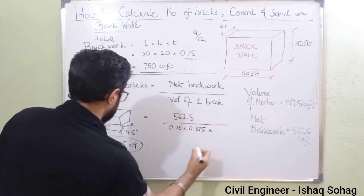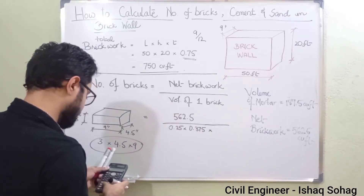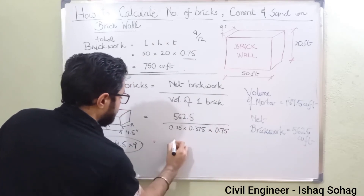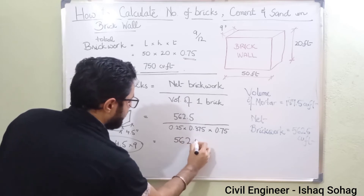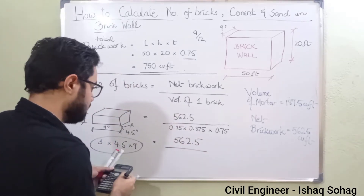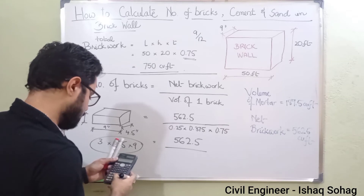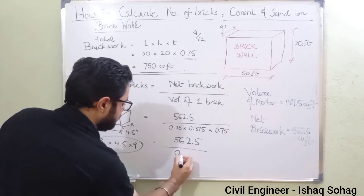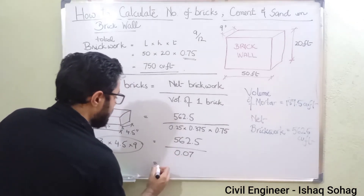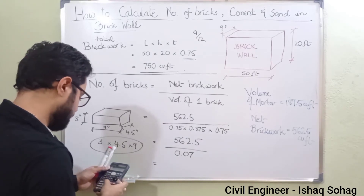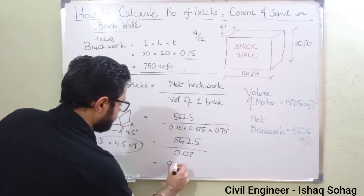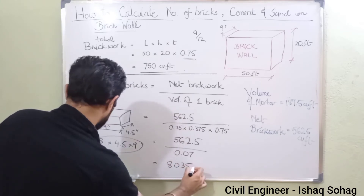Multiplying these together: 0.25 × 0.375 × 0.75 = 0.07 cubic feet. So the volume of one brick is approximately 0.07 cubic feet. Therefore, 562.5 divided by 0.07 gives us 8035.71, which is approximately 8036 bricks.